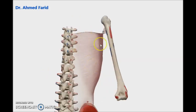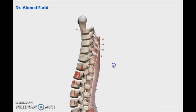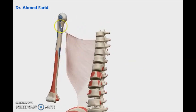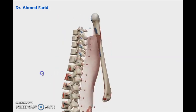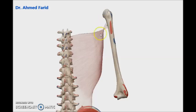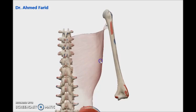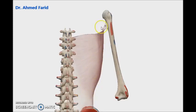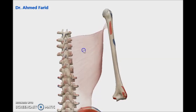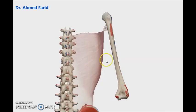The muscle is inserted into the floor of the bicipital groove of the humerus anteriorly. So the muscle comes from the back and is inserted in the anterior aspect of the humerus — the floor or medial aspect of the bicipital groove. There is a twist similar to pectoralis major: the lower fibers of latissimus dorsi are inserted upward while the upper fibers are inserted downward in the bicipital groove. This twist, together with teres major, forms the posterior fold of the axilla.